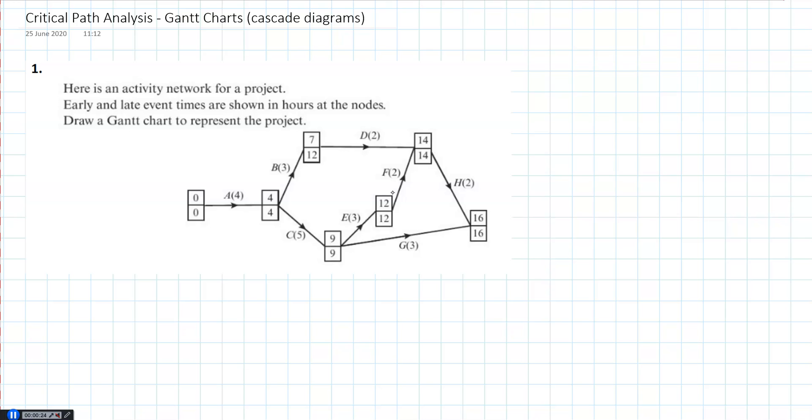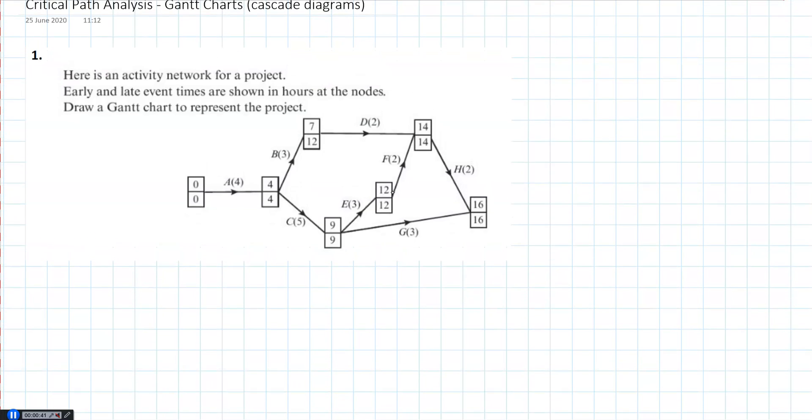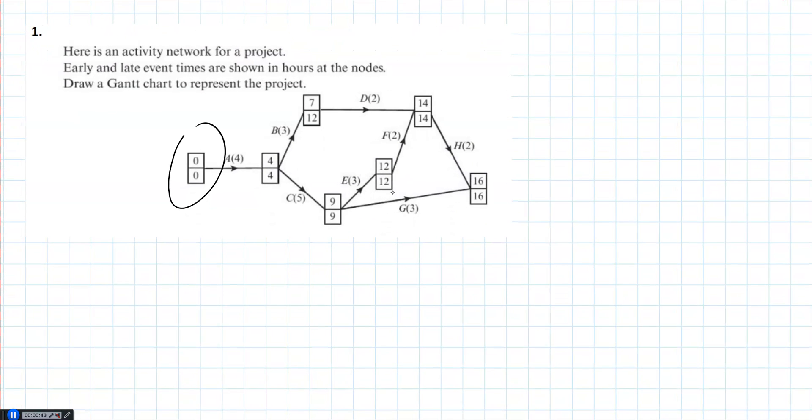So here's an activity network for a project. Early and late event times are shown in hours at the nodes. These are our events, these are our activities. Draw a Gantt chart to represent the project. To draw our Gantt chart, I've put grids on. First thing to do is to check when we start, which is obviously day zero, and how long it takes. So the last box is 16, so we need to have 16 days.